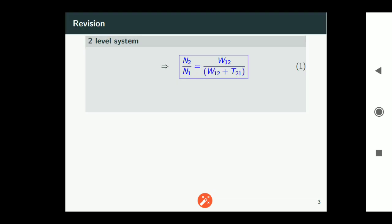In the case of two level system, the ratio of two populations is given by this equation 1. At best the upper level population can reach n0 by 2. This implies basically that lasing is impossible in a two level system.